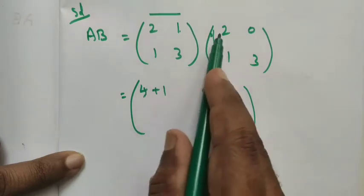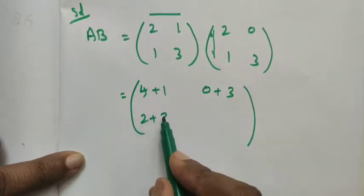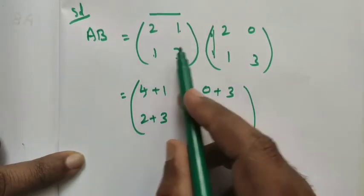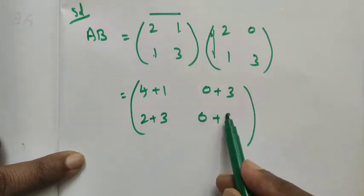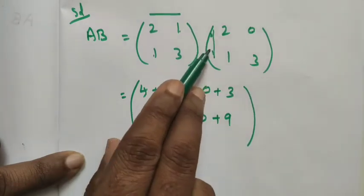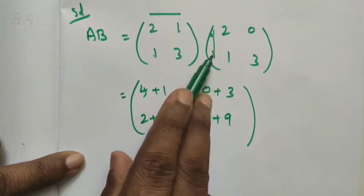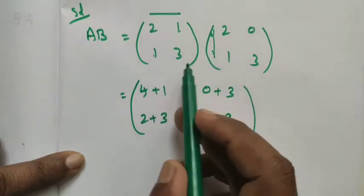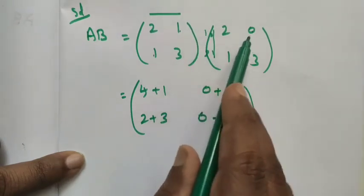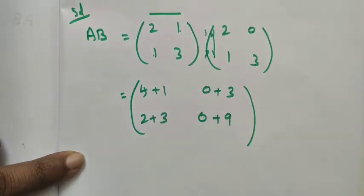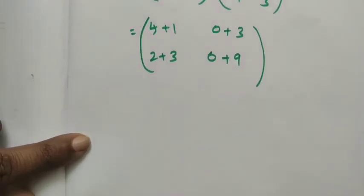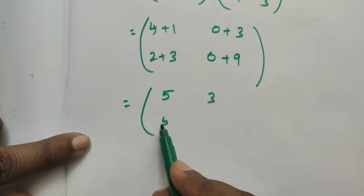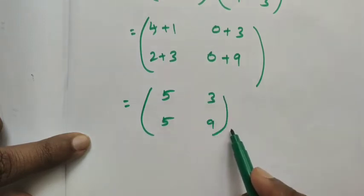For the second row, first column: 1×2 = 2 and 3×1 = 3. For the second row, second column: 1×0 = 0 and 3×3 = 9. Adding the terms: we get the result matrix AB = [5, 3; 5, 9]. The order of the result matrix is 2 by 2.